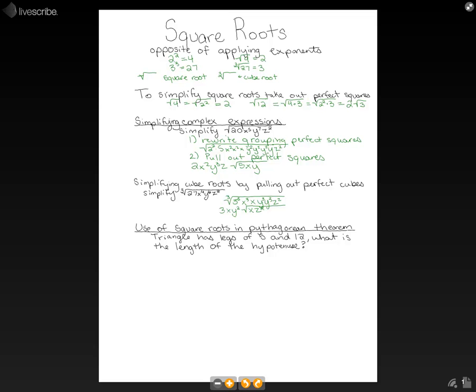Now let's think of a more practical example of how to use square roots, and we're going to use the Pythagorean theorem. So a triangle has legs of 5 and 12, and we want to know what is the length of the hypotenuse. So first let's write out our Pythagorean theorem.